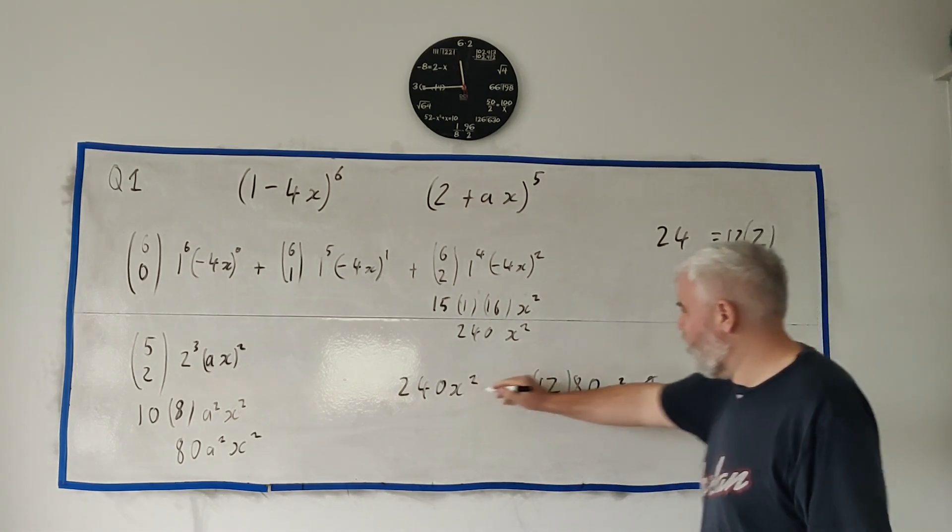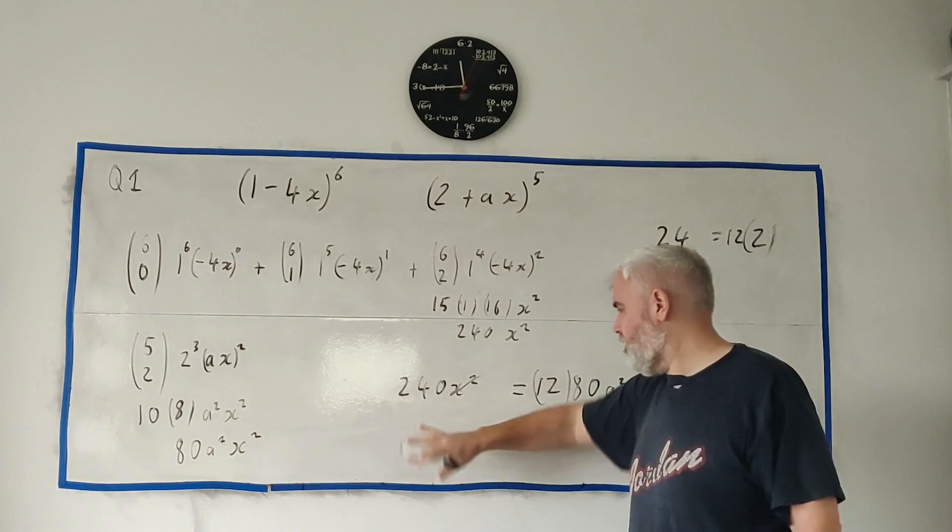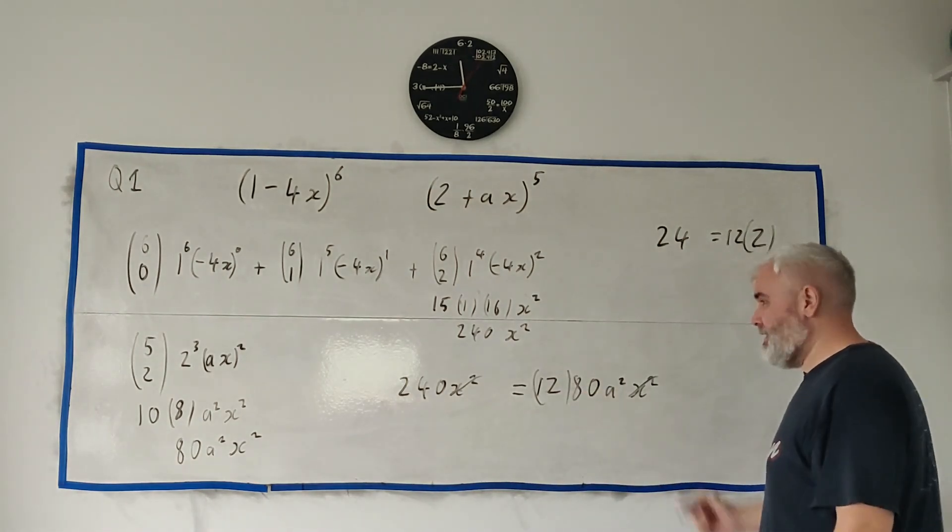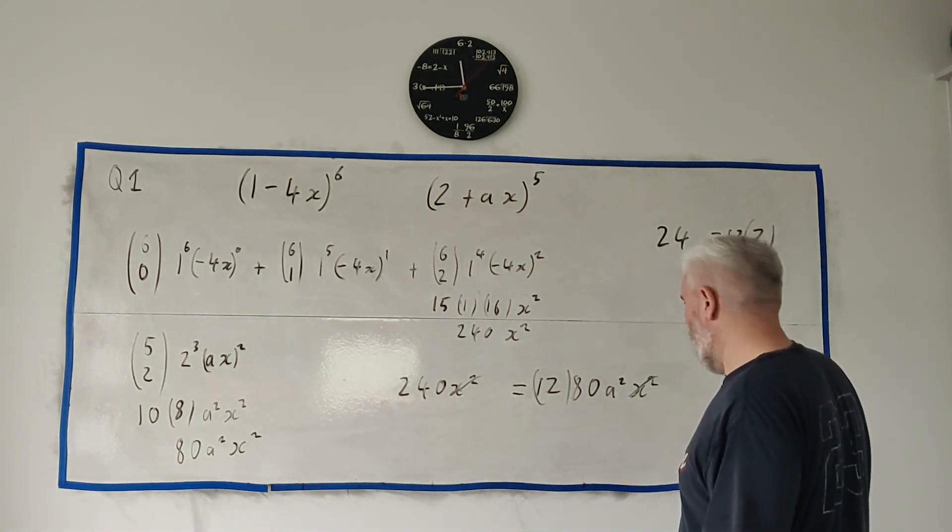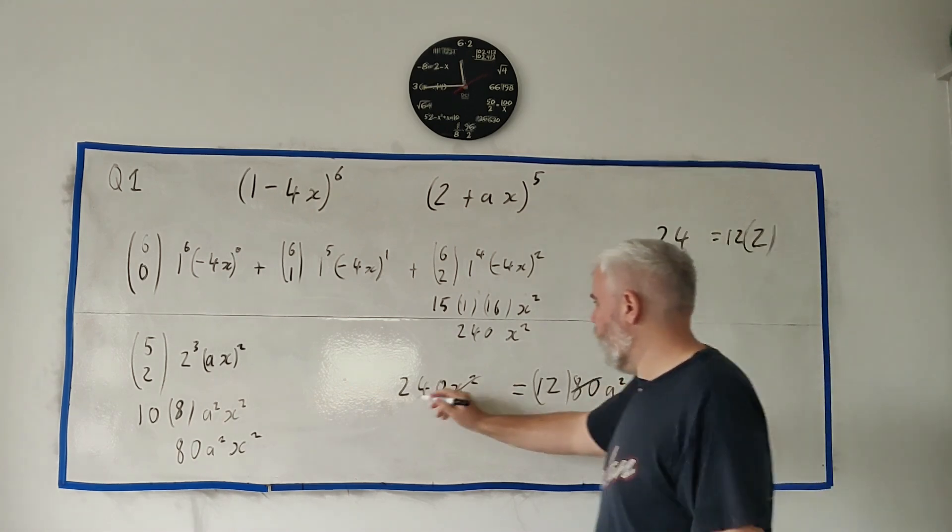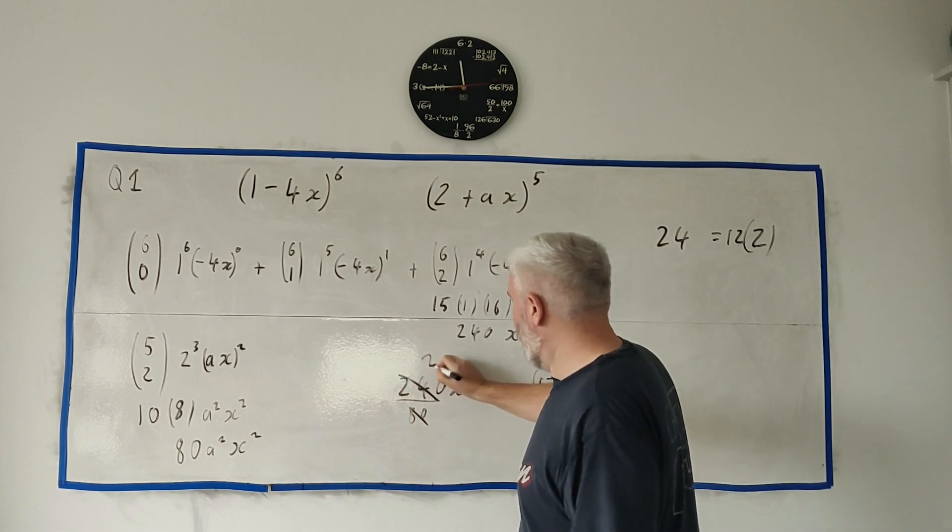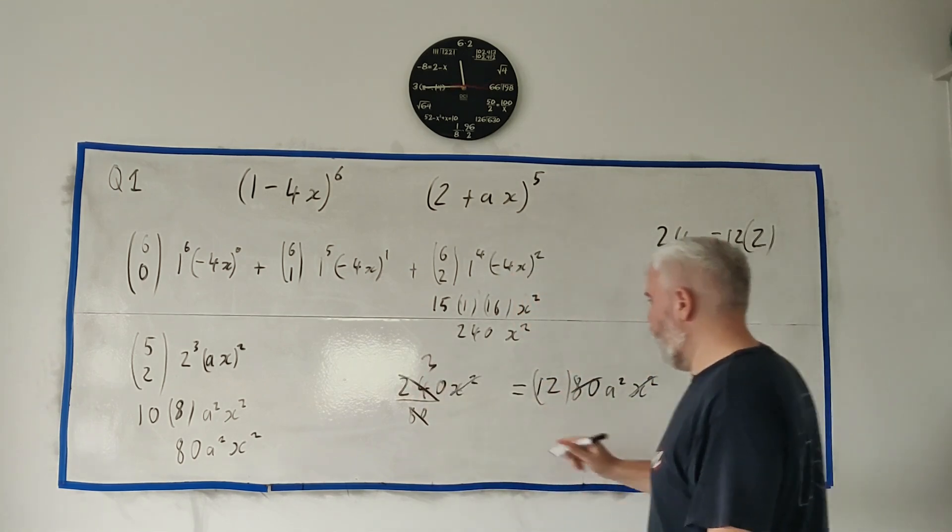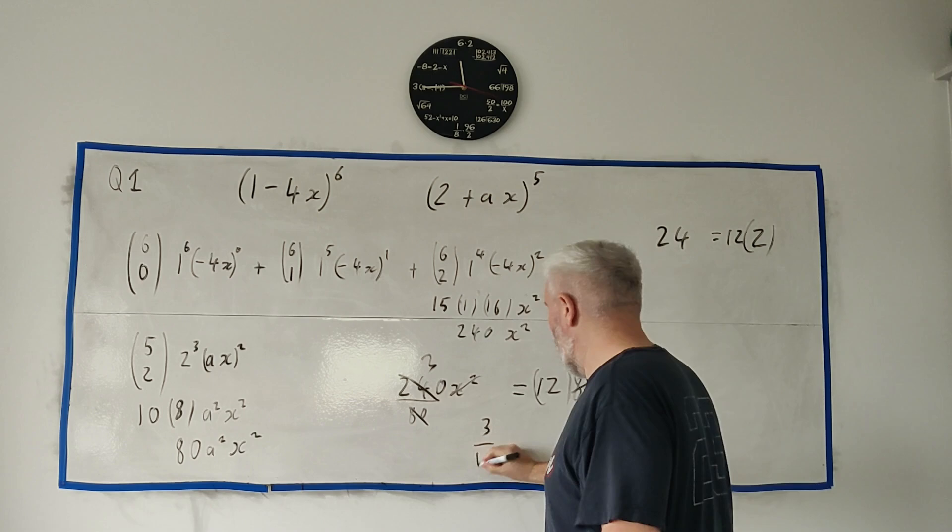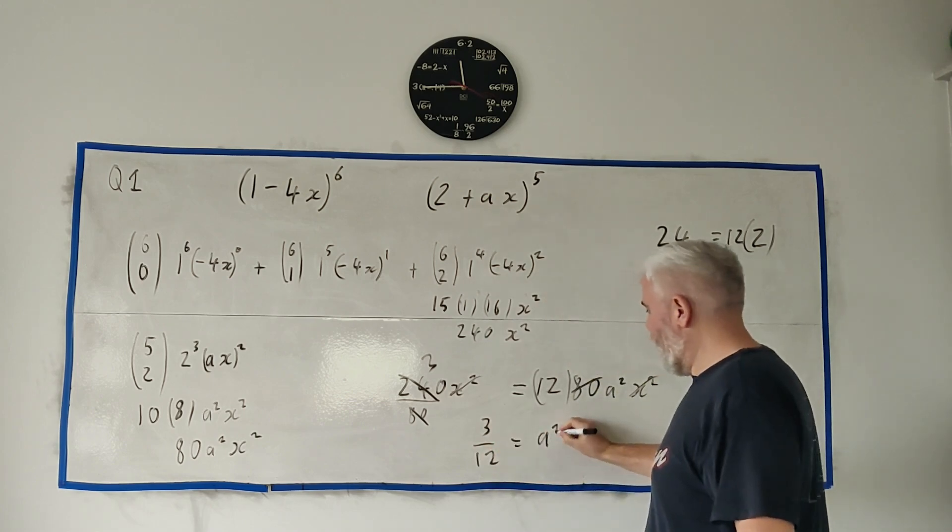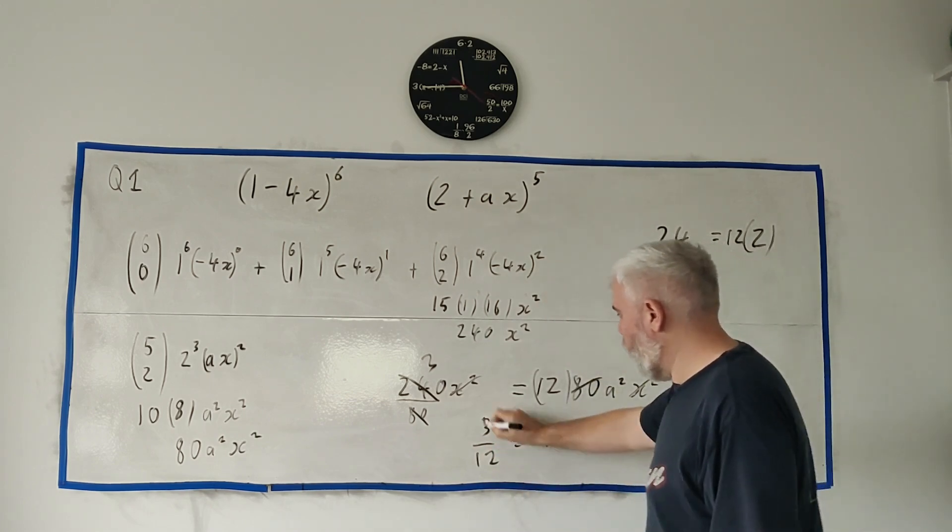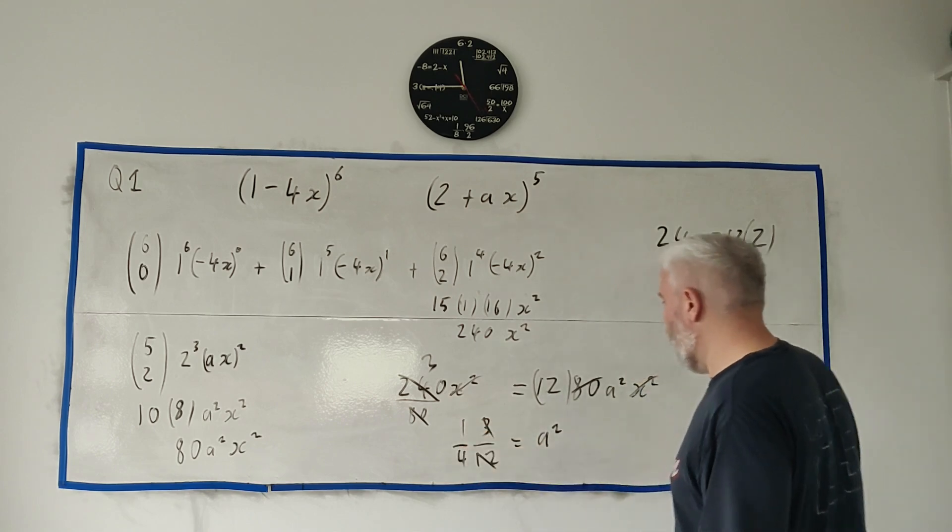Clean this up, x squared, we're only interested in this coefficient, so they cancel. And we can start dividing across 80. 80 would divide over here, and that goes in 3 times. Divide by 12. So we're left with 3 over 12 is equal to a squared, or that's 1 over 4.